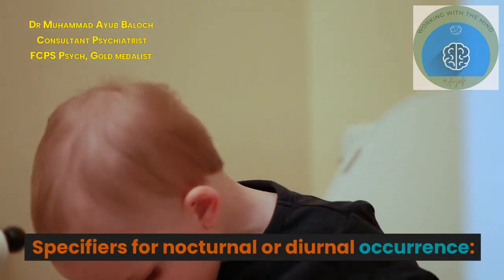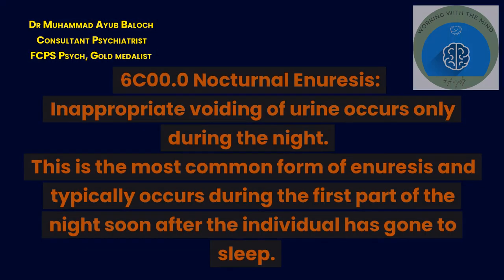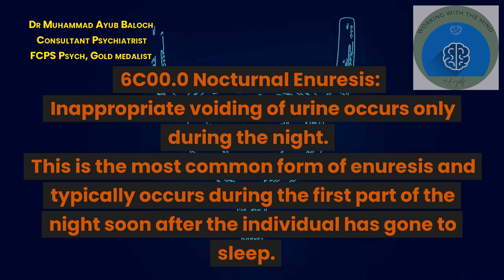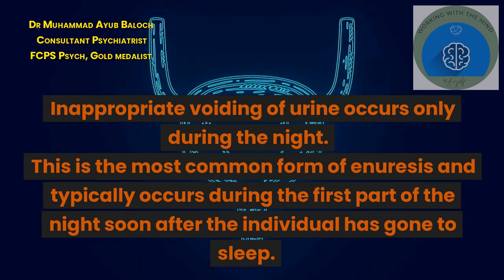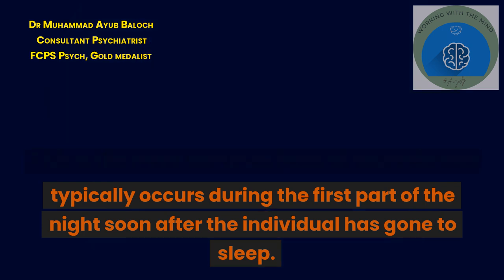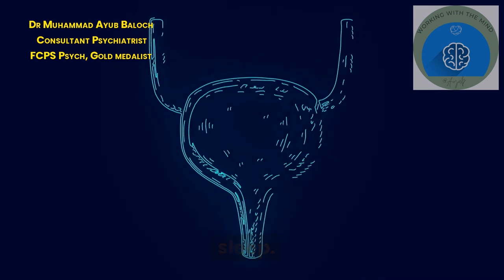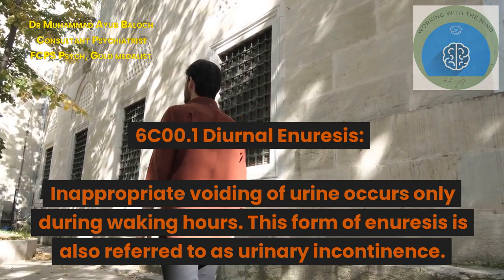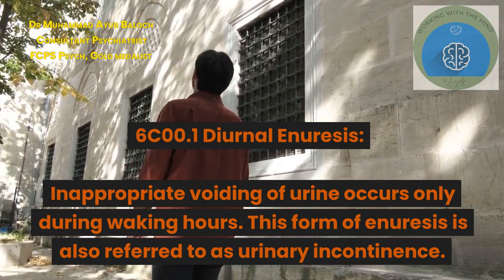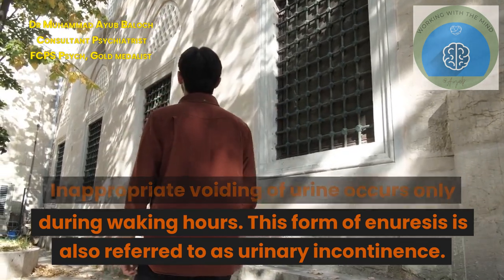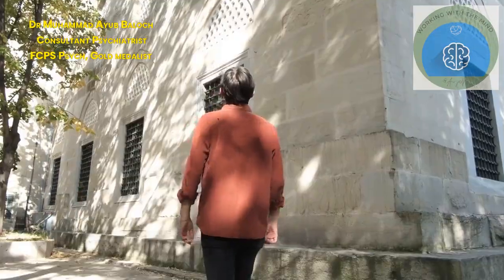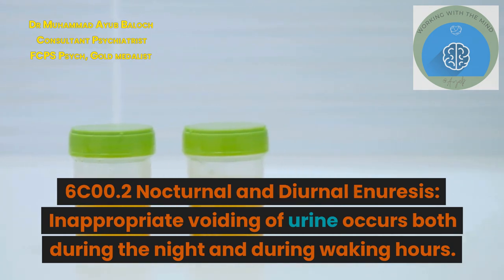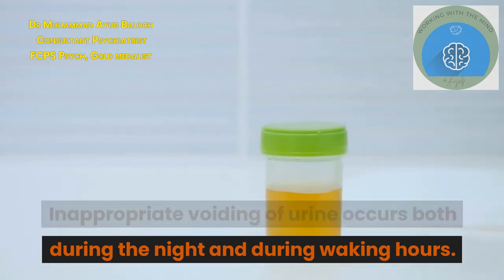Specifiers for nocturnal or diurnal occurrence: 6-C00.0 nocturnal enuresis — inappropriate voiding of urine occurs only during the night; this is the most common form and typically occurs during the first part of the night. 6-C00.1 diurnal enuresis — voiding occurs only during waking hours. 6-C00.2 nocturnal and diurnal enuresis — voiding occurs both during the night and during waking hours.